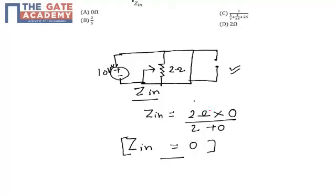So in this case my input impedance is 0. So my correct option is option number A. Thank you very much.